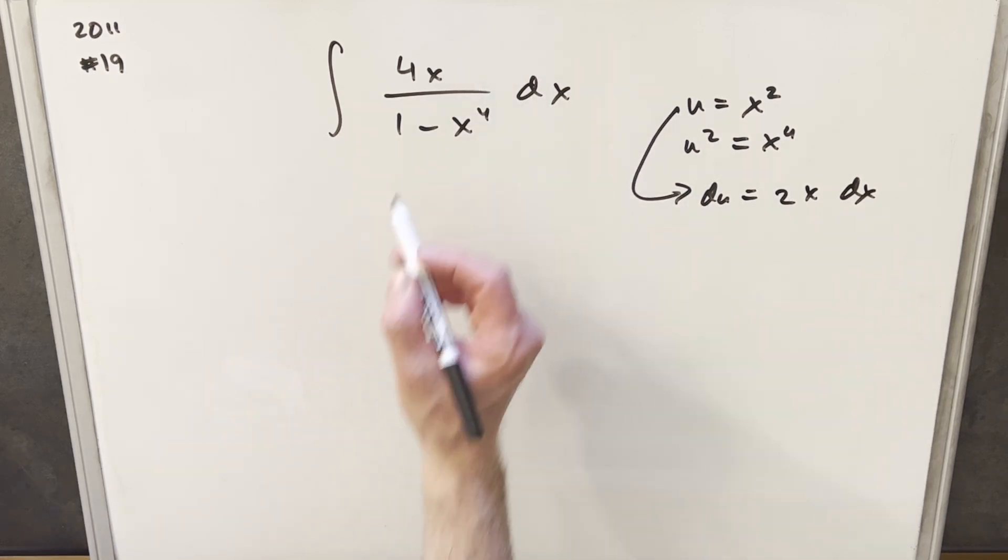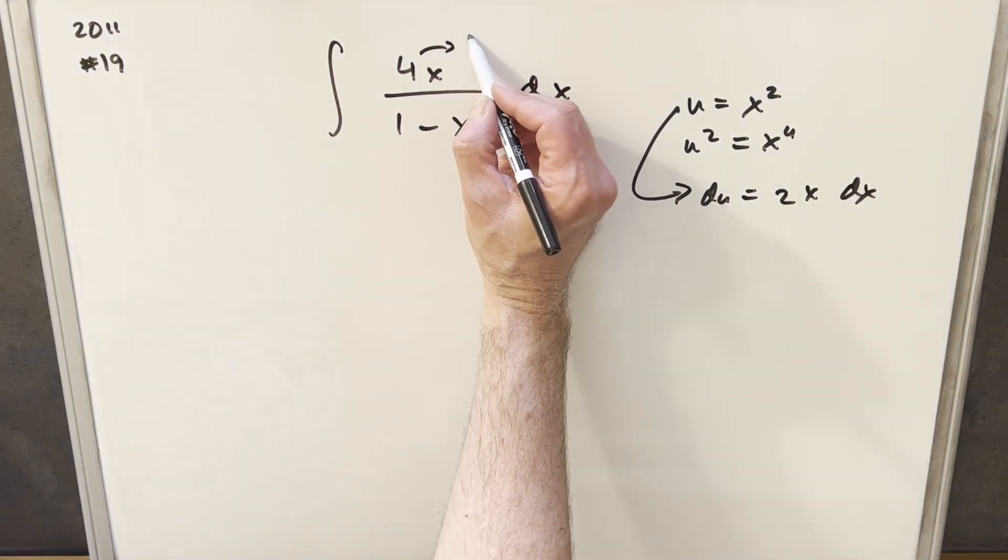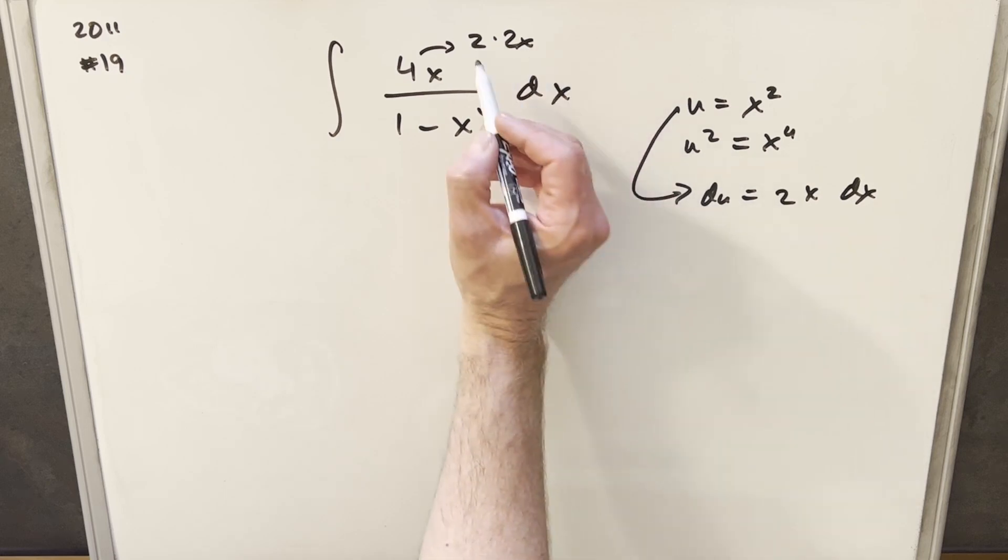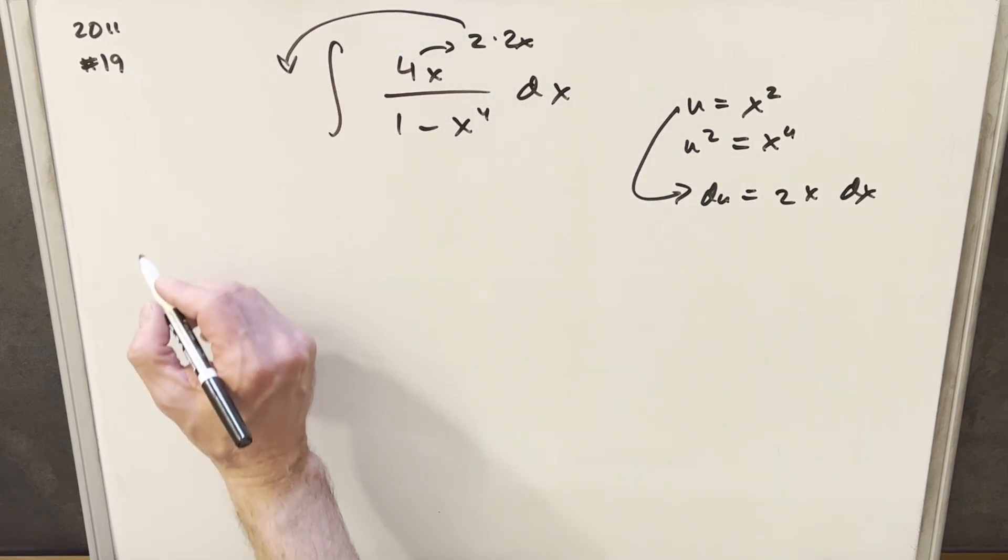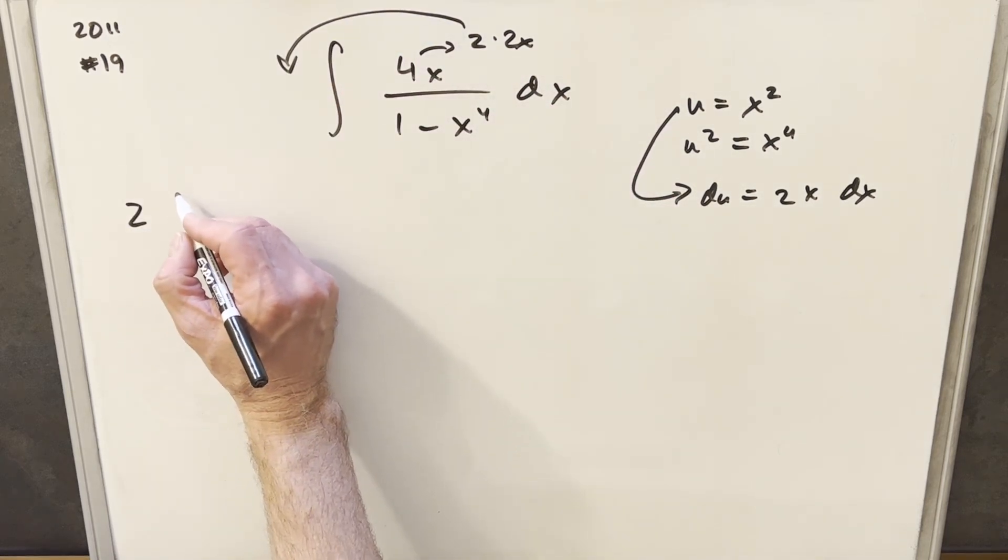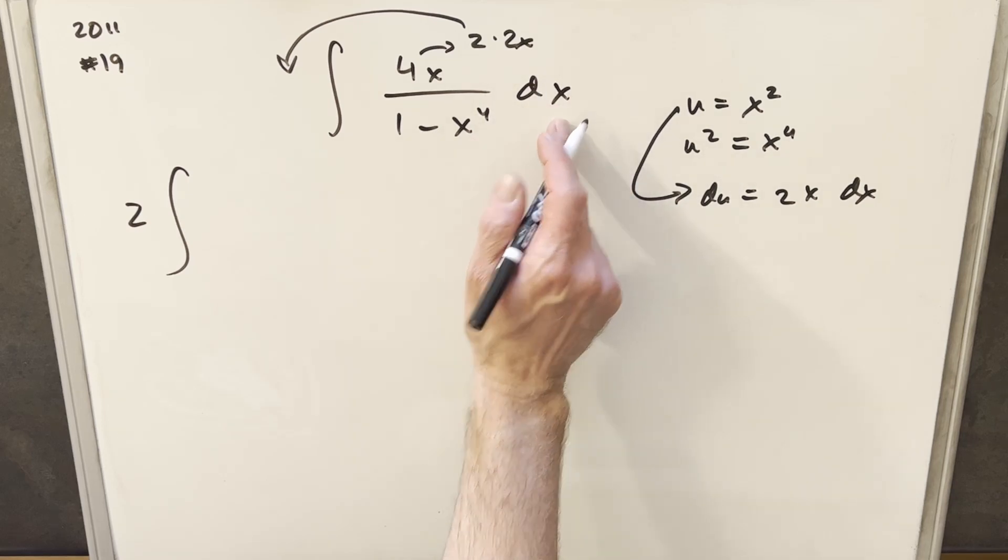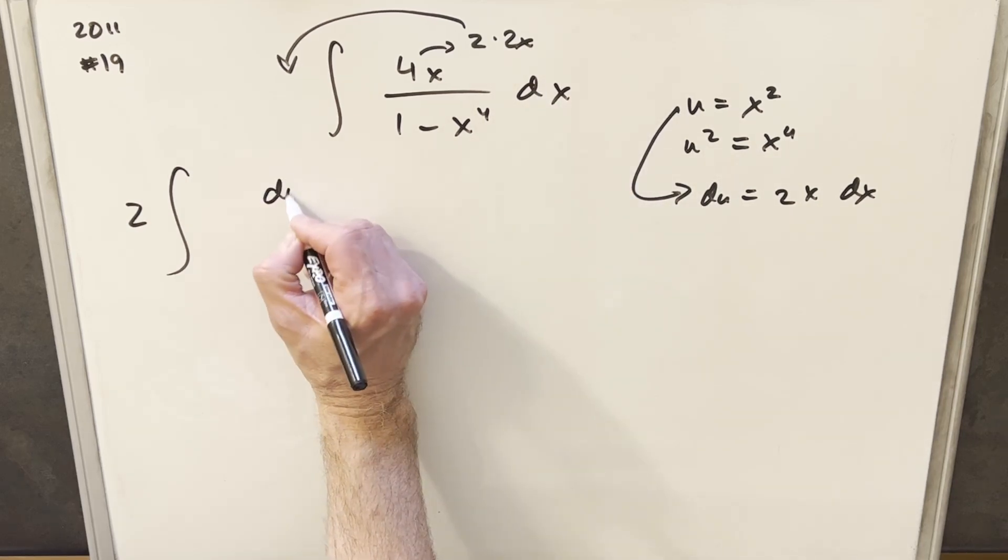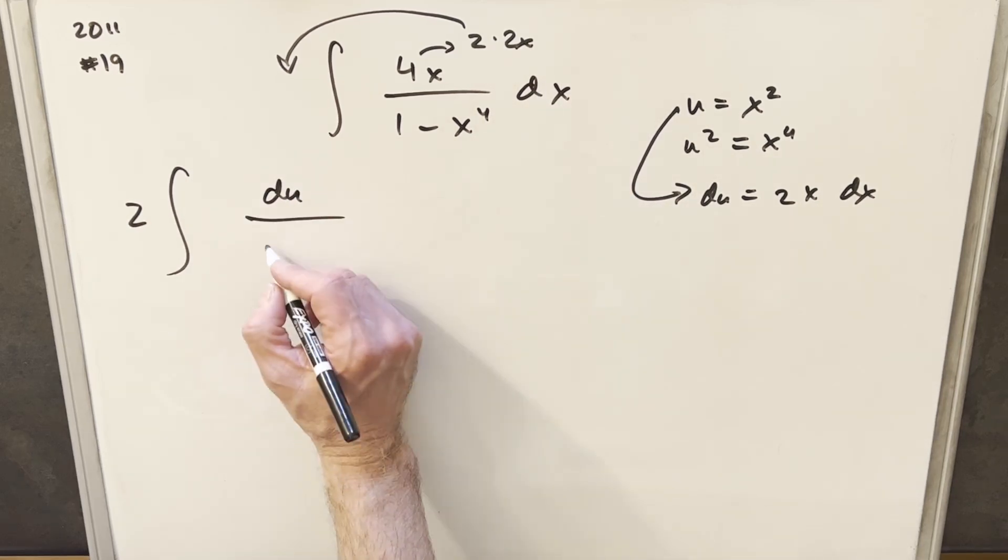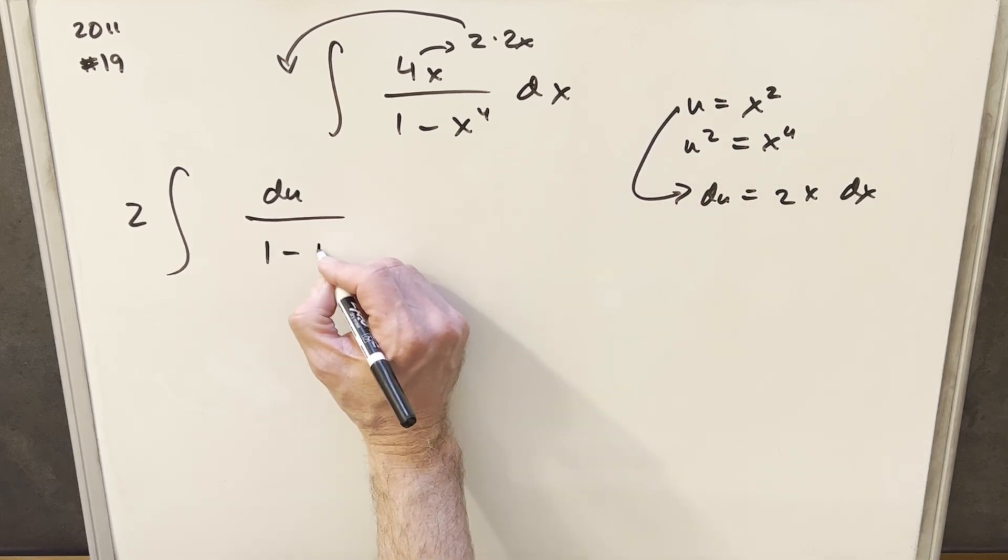Notice that's really similar to what we have in the numerator. What I can do is we'll just write this as 2 times 2x, and I can bring a 2 up front. So when you write this, we'll have 2, we'll have 2x dx in the numerator, but that's just our du. In our denominator, we're going to have 1 minus x to the 4th is u squared.